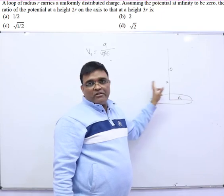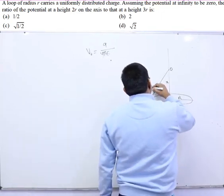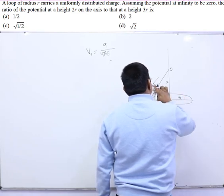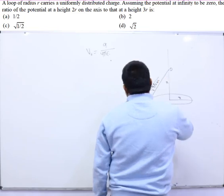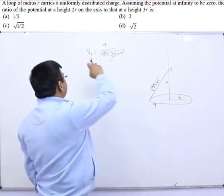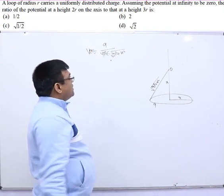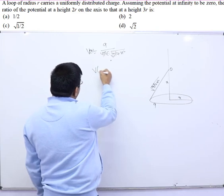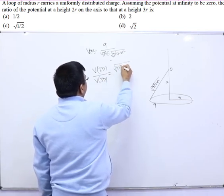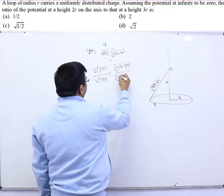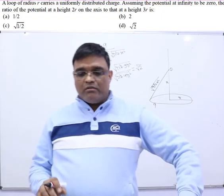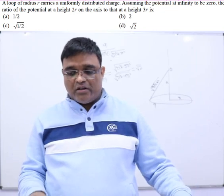The potential at point O is simply q over 4πε₀ times the distance from O to points on the ring. That distance is √(r² + x²). So for the ratio of potentials at x = 2r and x = 3r, we get √(r² + 9r²) over √(r² + 4r²), which simplifies to √(10/5) = √2. So the answer is option D.